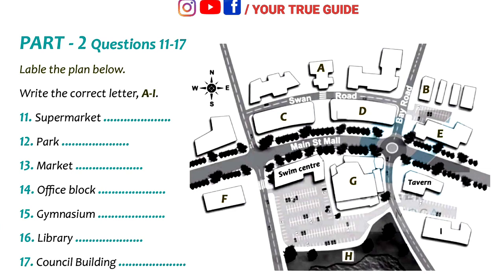Another pedestrian crossing to the west of the pool will give students and other users safer access to the new library. Library users will be able to share the supermarket parking. We expect that Swan Road may become a busier thoroughfare once the Main Street has been converted to pedestrians only, but we'll address that issue in the second stage of the development. In the meantime, the east end of Swan Road will be converted into a public car park, between the council building and the market.